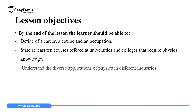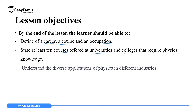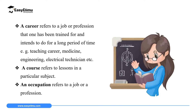By the end of this lesson I expect you to be able to define a career, define a course, and define a profession and occupation. I will also expect you to state at least 10 courses offered in universities and colleges that require the knowledge of physics, and finally to understand and appreciate the diverse application of physics in different industries.